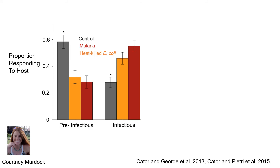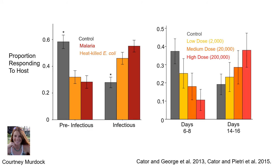What we found was that these changes in behavior were not only not specific to living parasites — they weren't even specific to Plasmodium. A general immune challenge with dead bacteria produced a similar behavioral and neurophysiological phenotype to the one that we see with malaria infection. Moreover, this response is dose dependent: the more dead bacteria we inject into mosquitoes, the less likely they are to respond to hosts six to eight days later, and then the more likely they are to respond fourteen to sixteen days later.